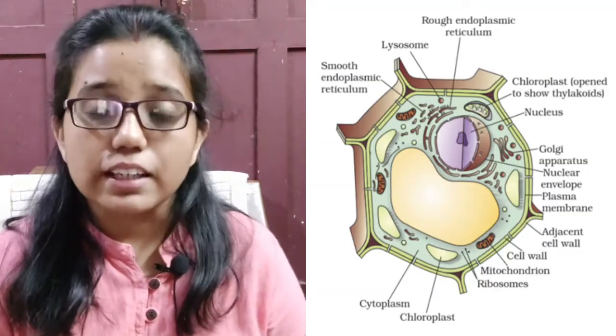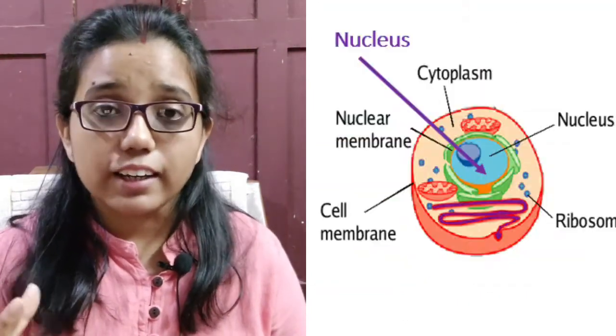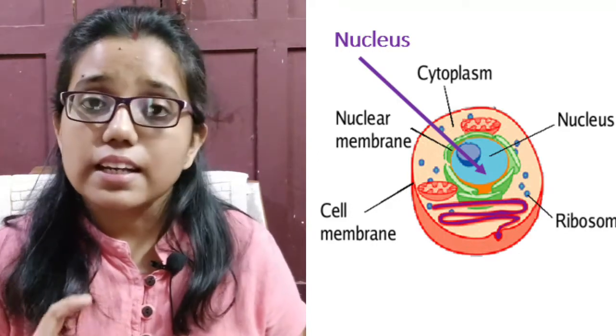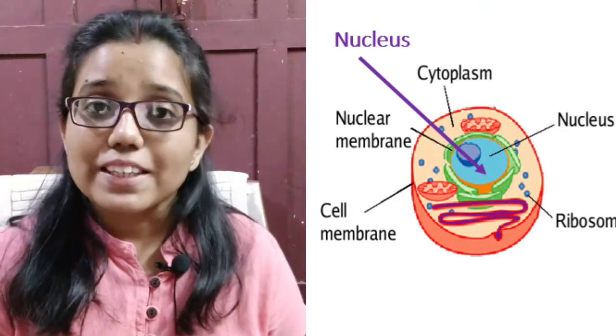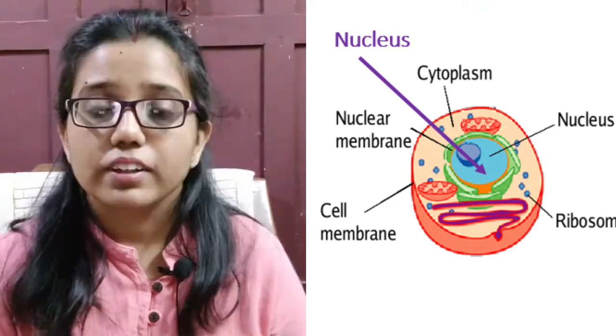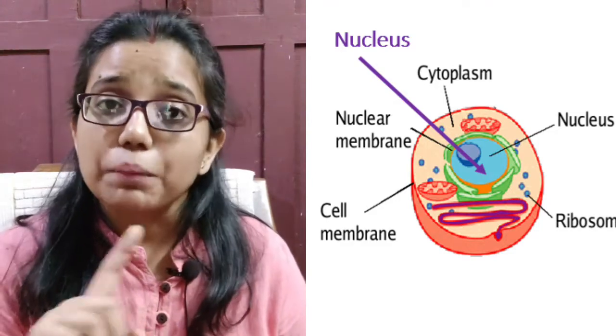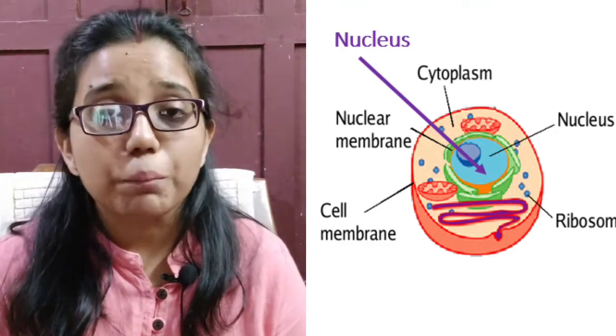And because of this cell wall, the plants can withstand much more changes in the environment than the animal cells. In microscopic study of a cell, you can see a darkly colored spherical structure near the center of each cell. It is called nucleus.